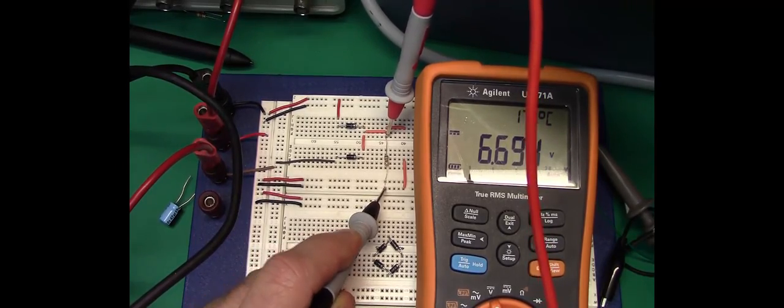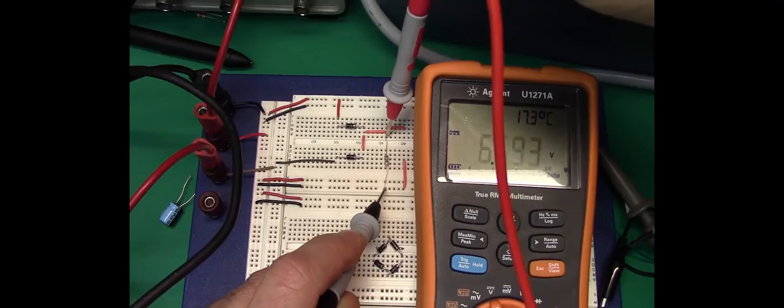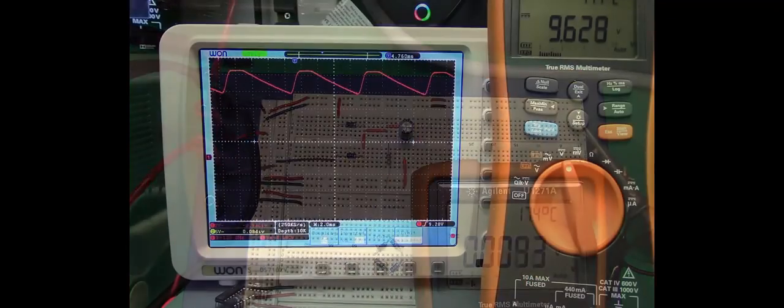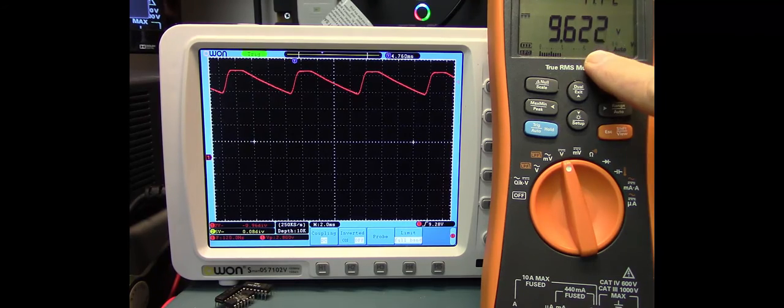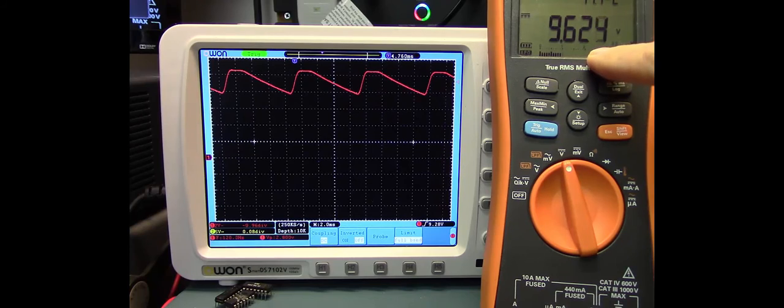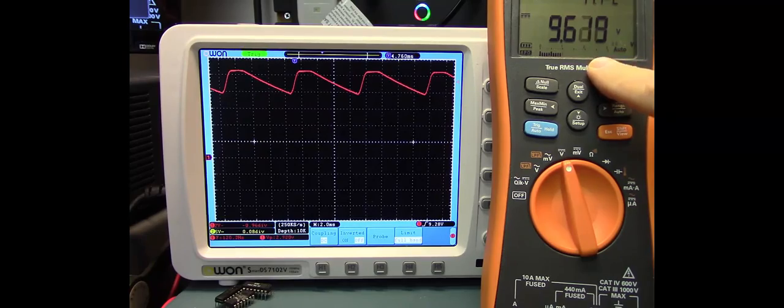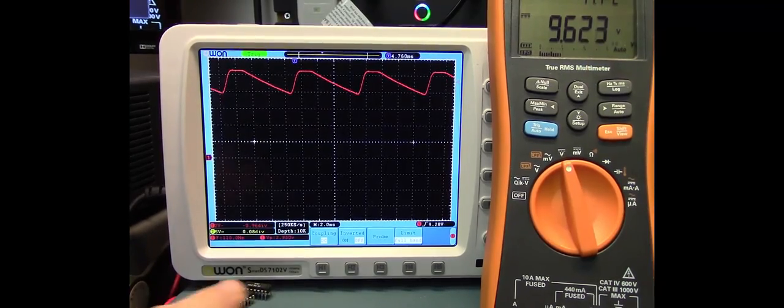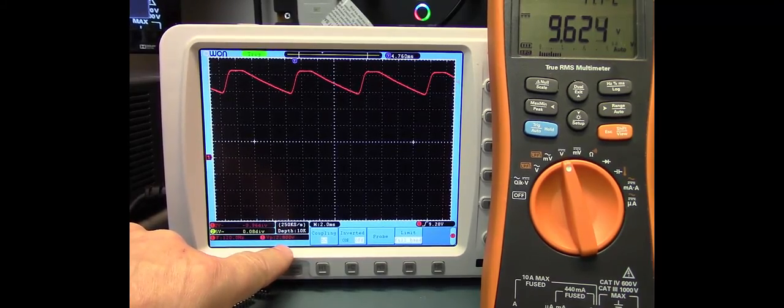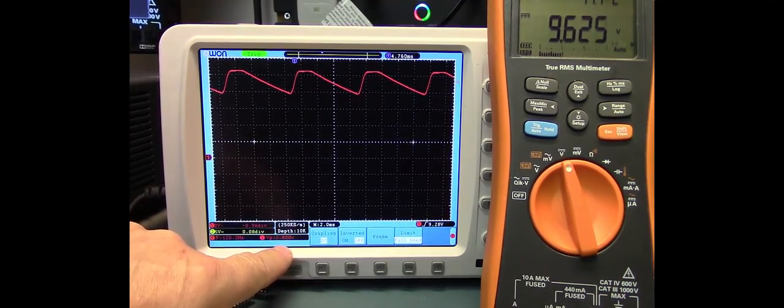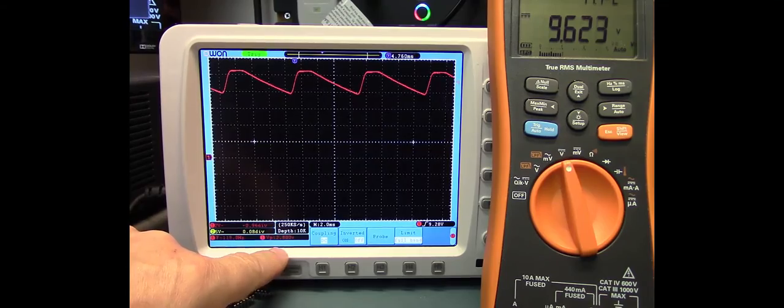Here's the output of the center tap full wave rectifier with the filter. You can see we're at 9.62 volts, which compares favorably to the 9.53 we should have out. So it's a little bit more DC voltage. And the ripple voltage is 2.8 volts, and that's extremely close to the value we should have had of 2.86.